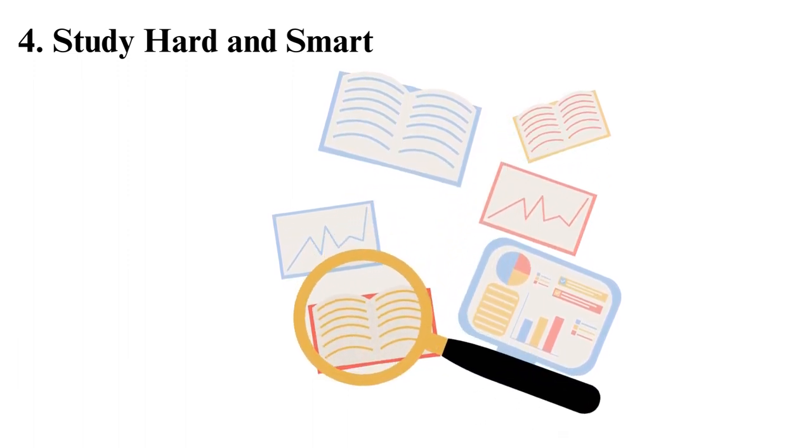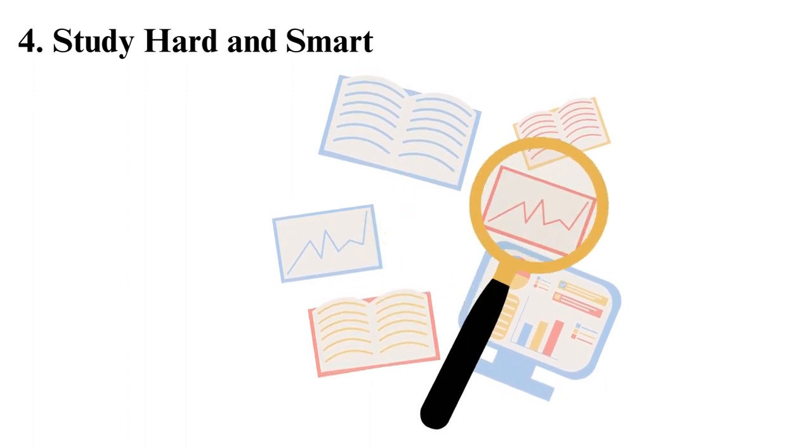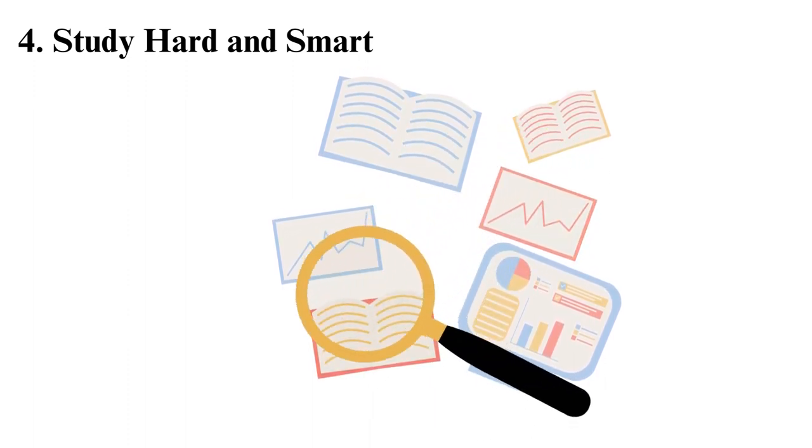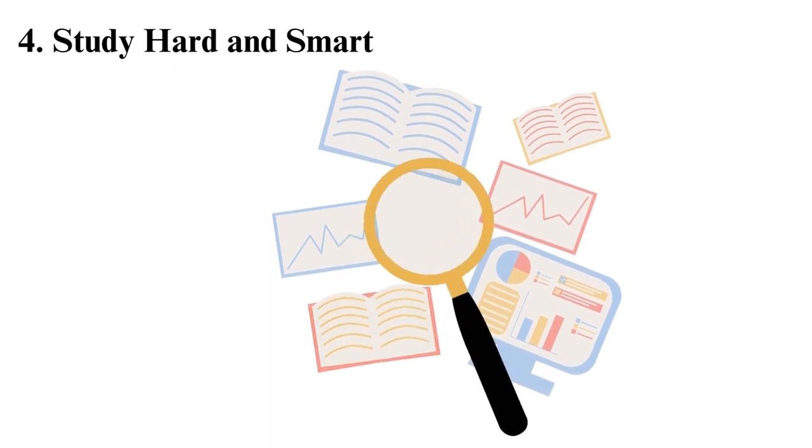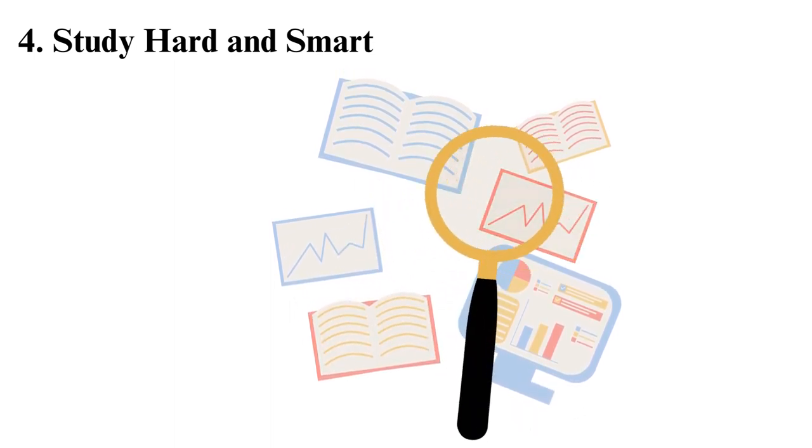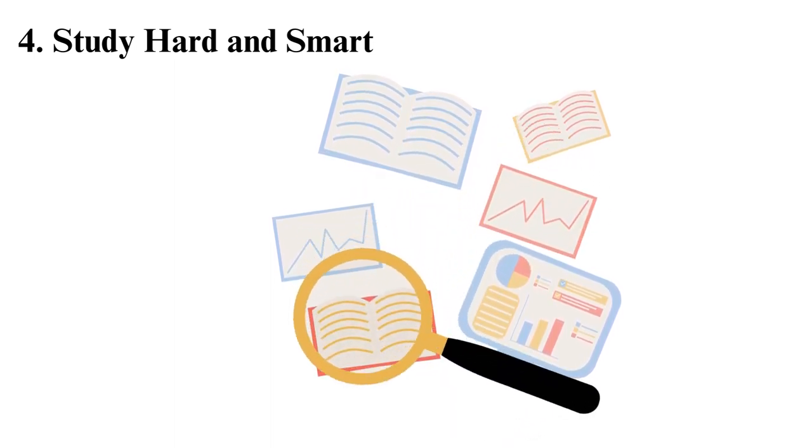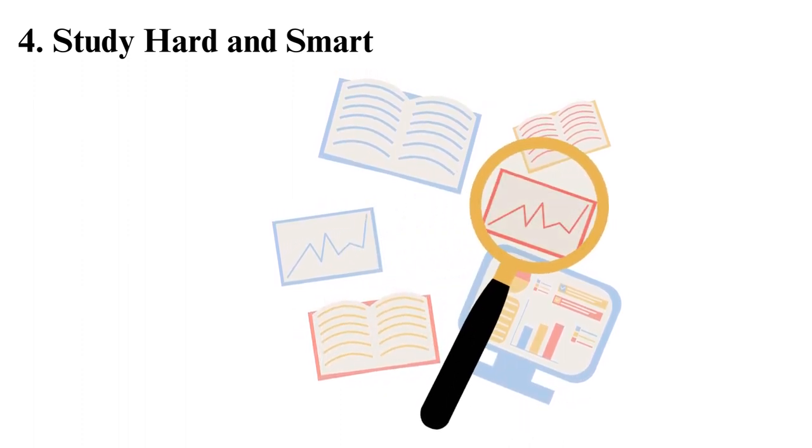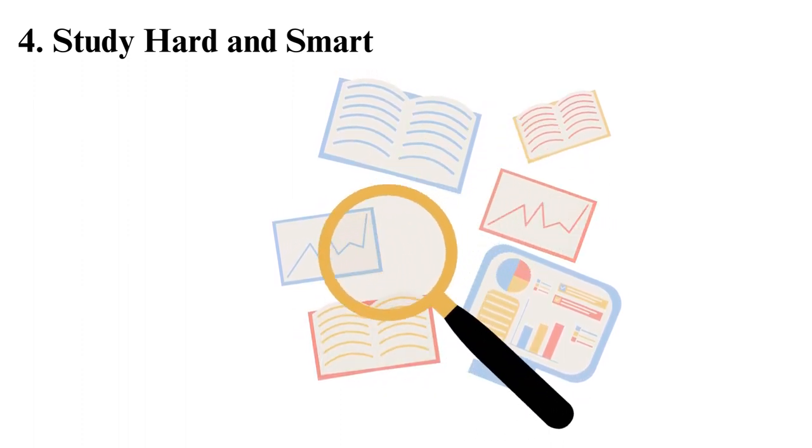Eliminate distractions. To study smart, ensure there are no distractions in your study space. The common disturbances you need to watch out for are mobile devices, television, people, pets. So switch off your mobile and TV and lock yourself in to prevent other people and pets from getting in and causing distractions.